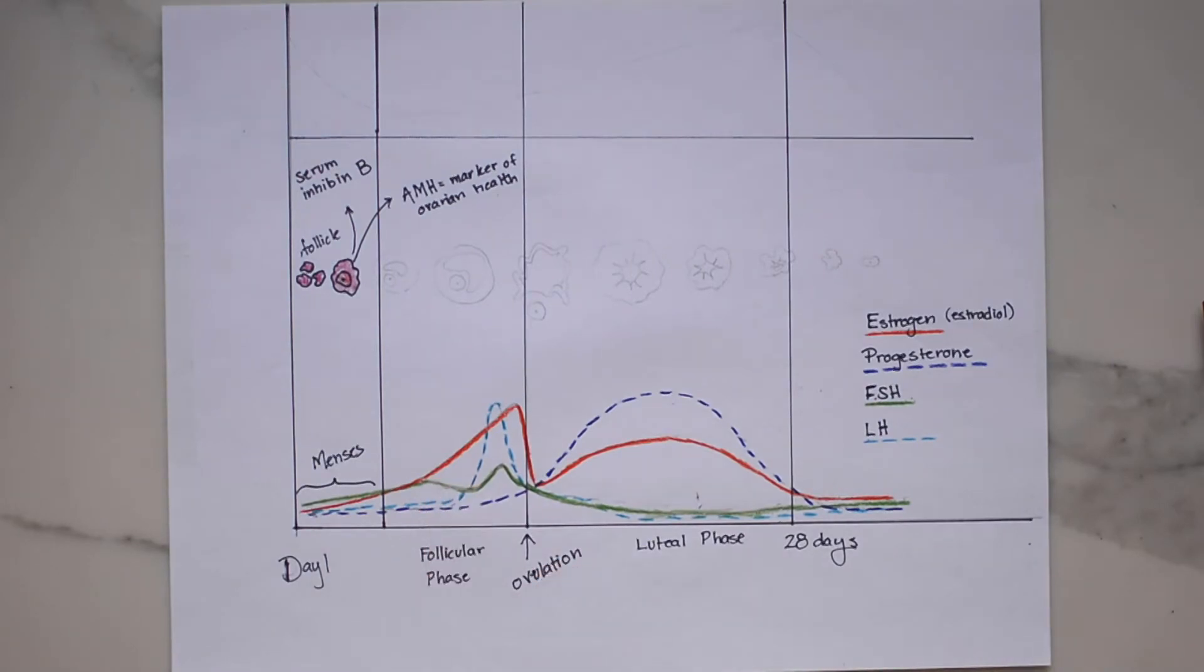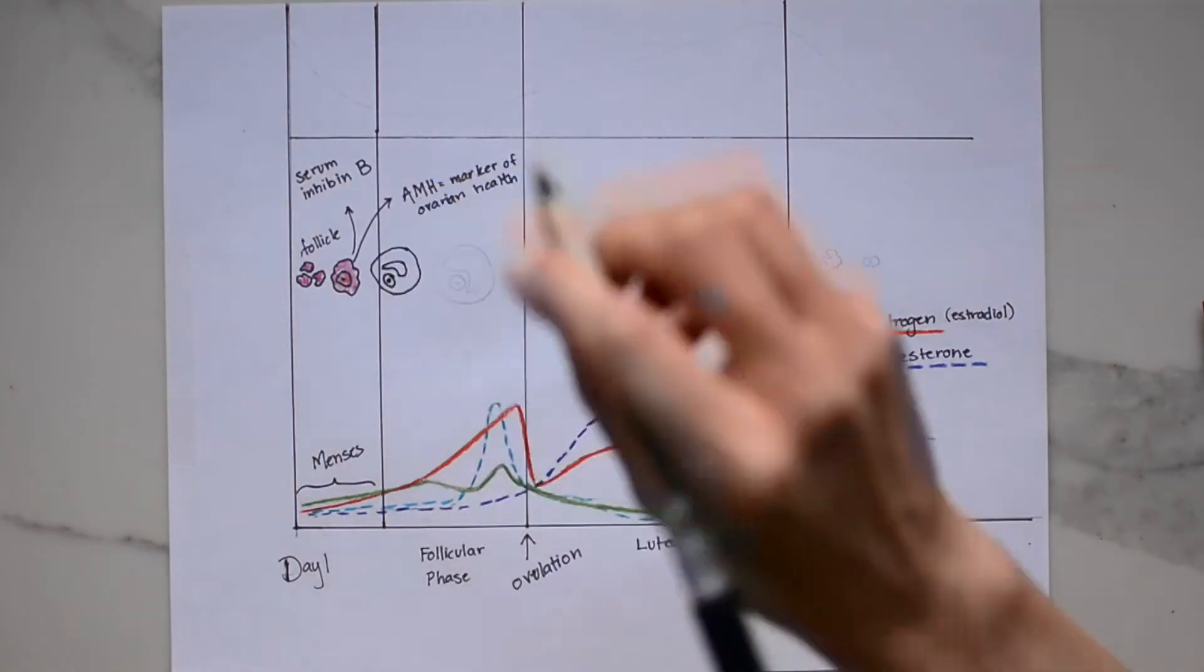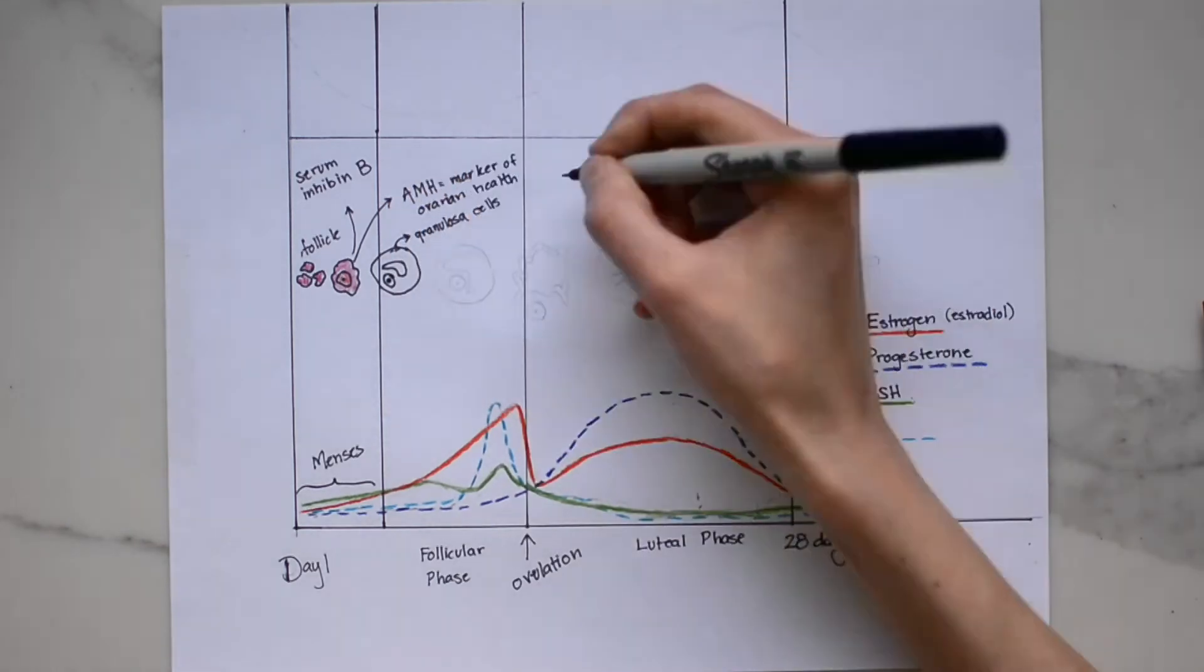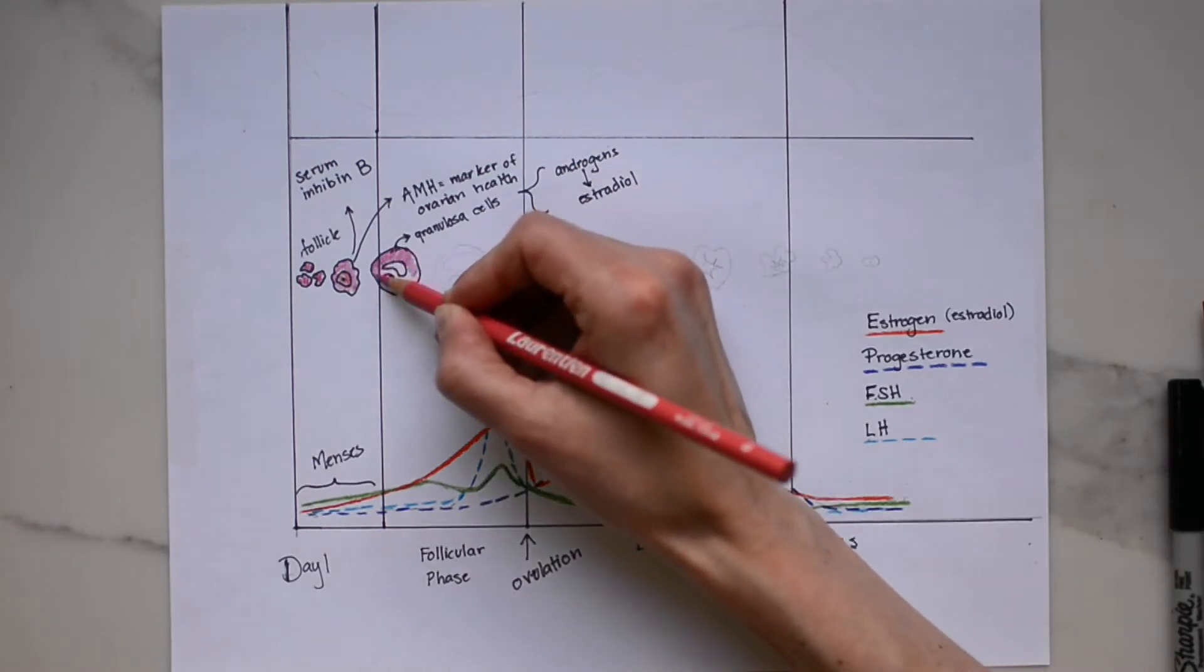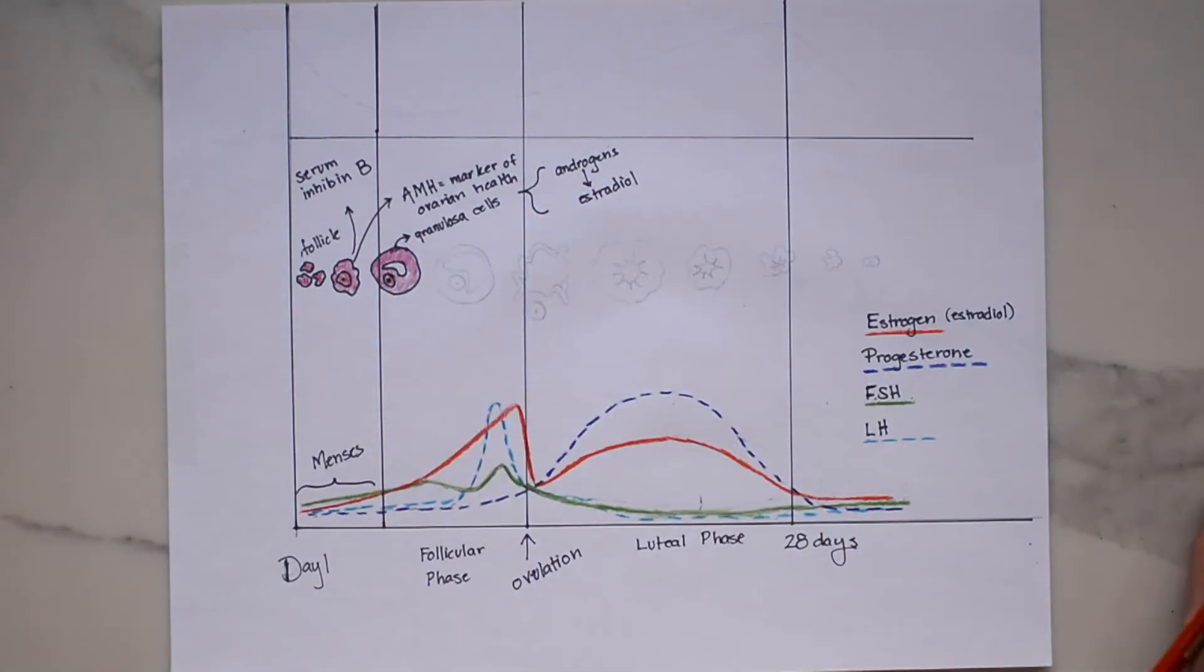Now we're at the mid follicular phase and this is where things get a little bit more complicated and we start to see how the hormones work together and the intricacies of their relationship. So the slight increase in FSH stimulates the follicles to develop, which we call folliculogenesis, and the production of estrogen via the granulosa cells. So granulosa cells are found in the developing follicle and through a process called aromatization they actually turn androgens into estradiol. So you can start to see that estrogen increasing and estrogen causes the lining of our uterus to grow and thicken.